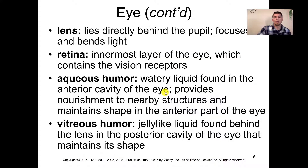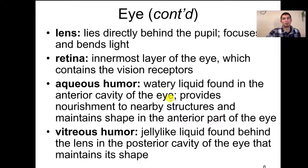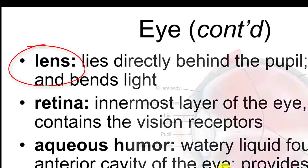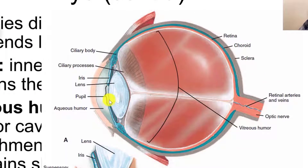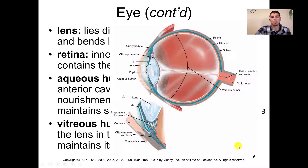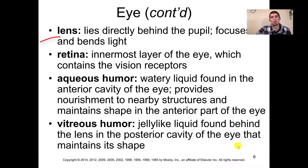When you look through the iris, what you're actually looking at then is the lens. The lens lies directly behind the pupil and is what focuses and bends the light. Directly behind the pupil opening is the lens, which will bend and direct that light and ultimately shoot it back to the retina — the innermost layer of the eye — which contains the vision receptors.